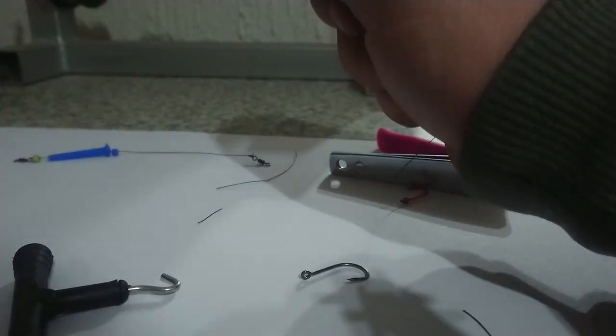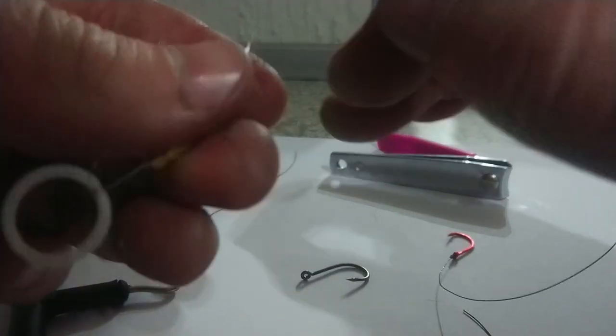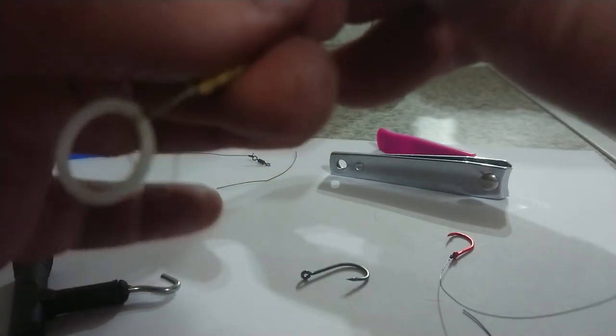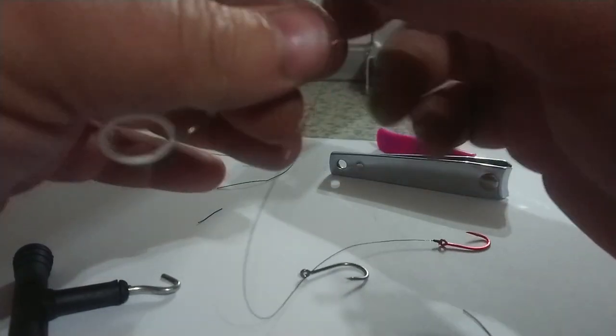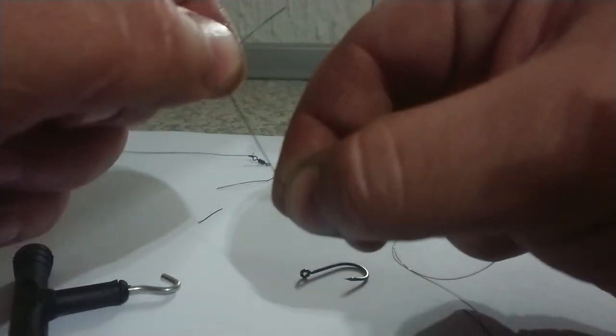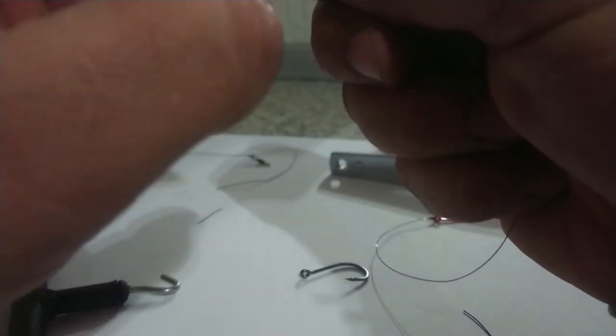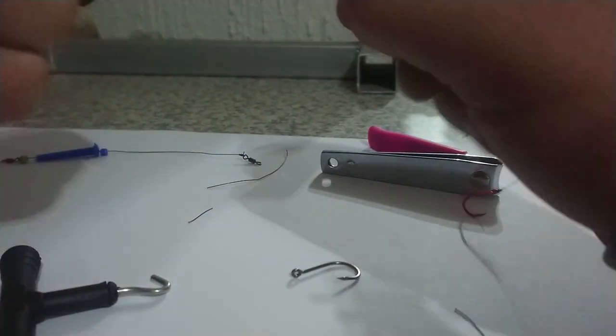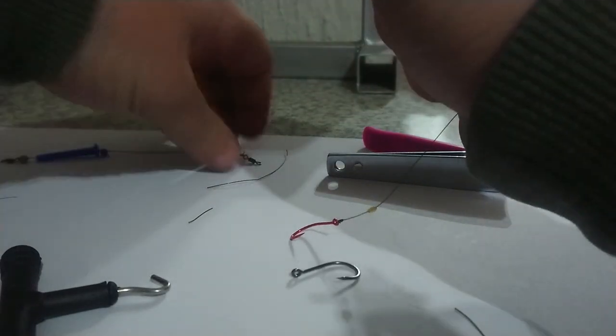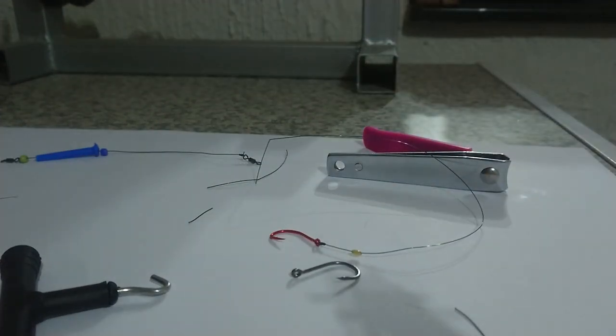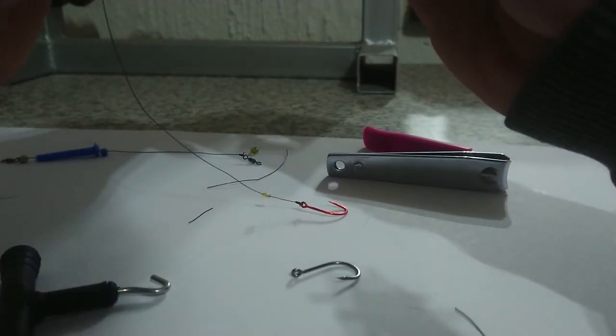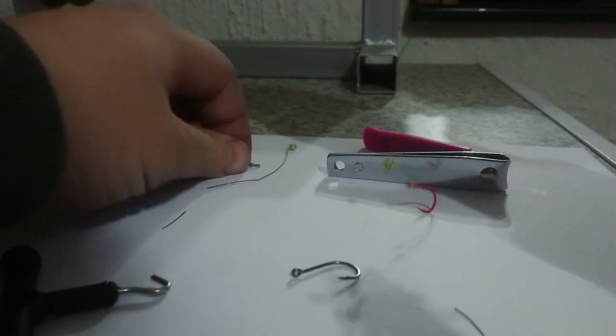Then what we do is we take this one and thread it through this little part here of the gummy stop. You want to do it relatively high. You're going to do one, put it all the way down there. And then just for safety sake, I'm going to add an additional two beads at the bottom here, because then it doesn't go through the swivel, the eye of the swivel.